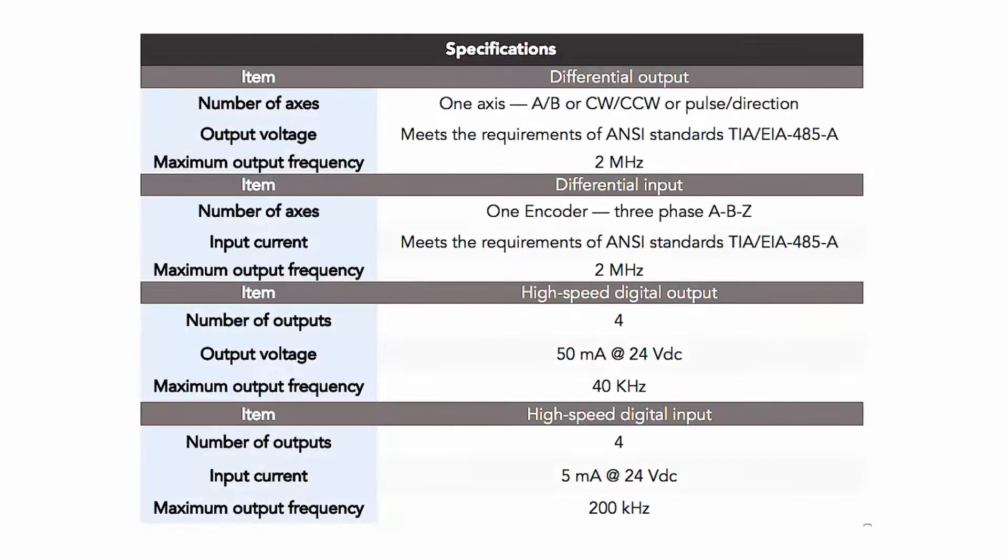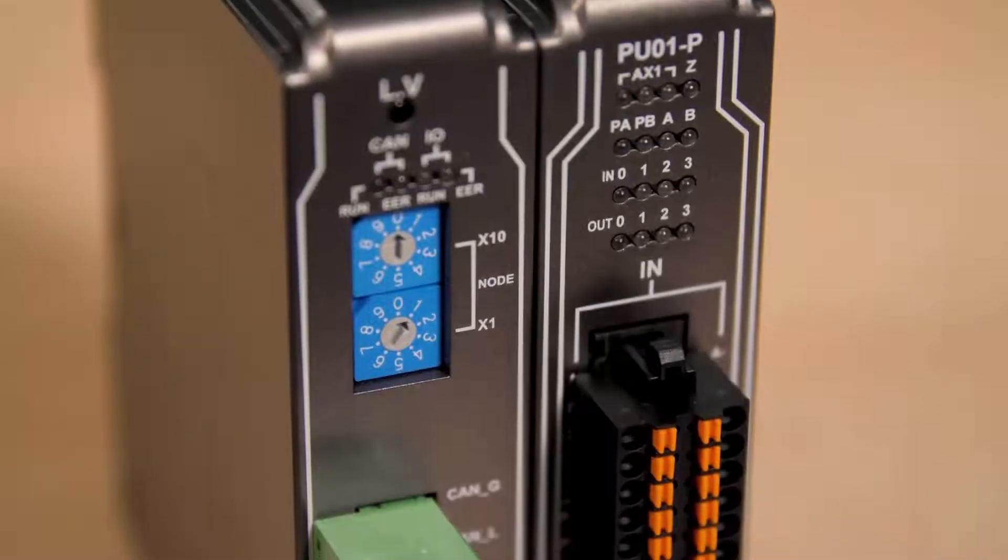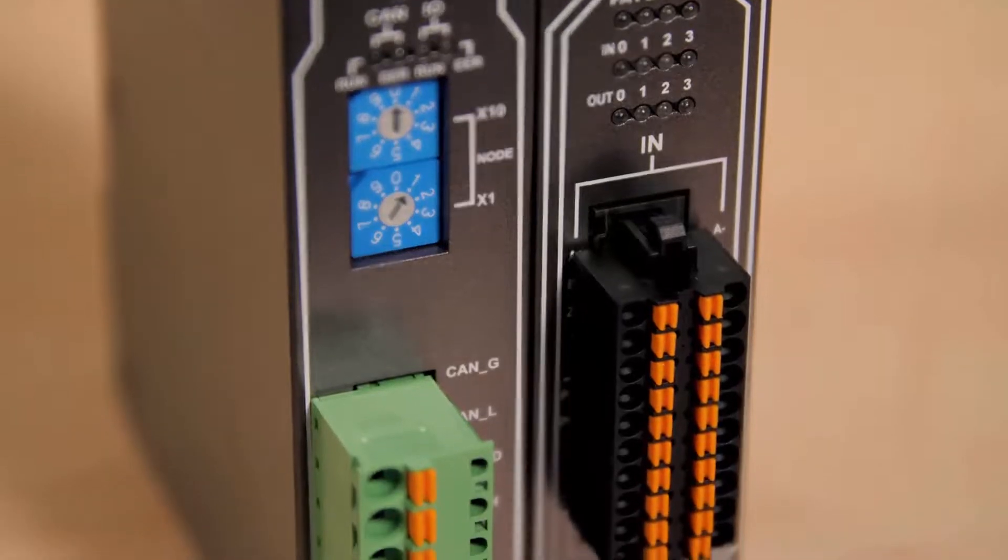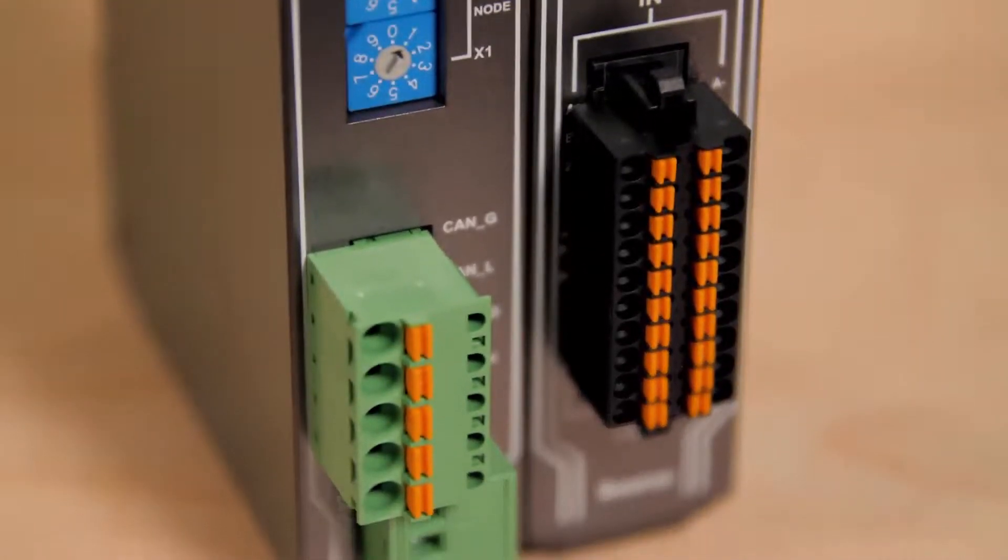Velocity control allows initial speed specification and S-curve motion profiles. The three-phase ABZ differential input works with encoders or manual pulse generators.